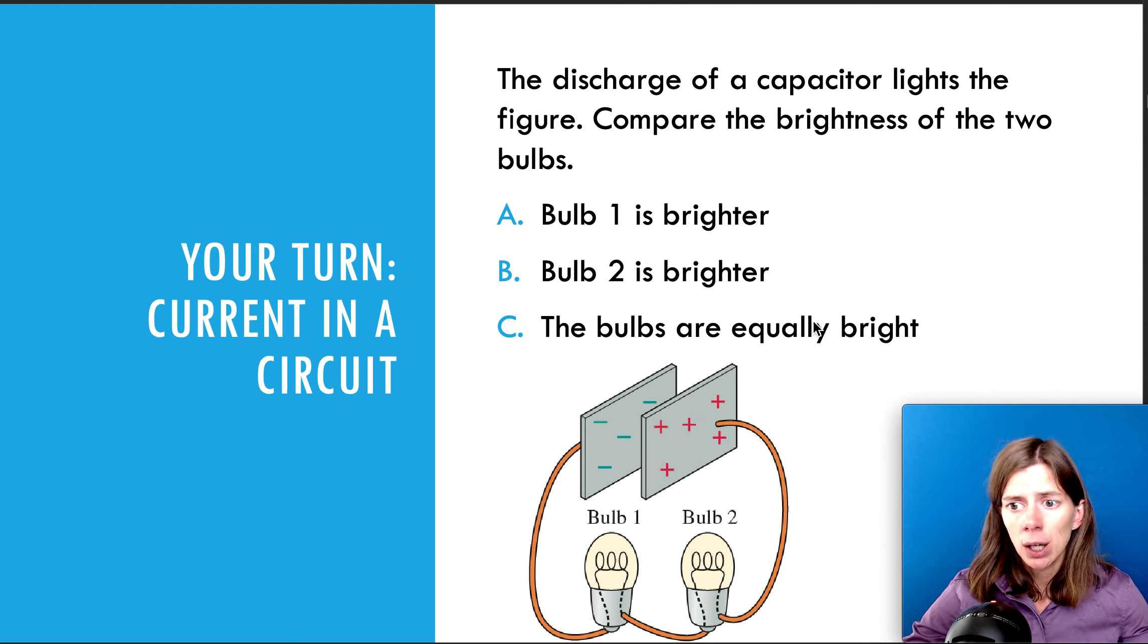Well, we've defined a current as the flow of positive charges. So, we know that the positive charges would move clockwise towards that negative plate. So, that's the direction of the current. So, which bulb is brighter? Well, we just learned conservation of current. The charge doesn't get used up. As the charges flow through bulb 2, then they're going to flow through bulb 1, and then they're going to reach the plate. So, the same amount of charge flows through each bulb. They're both going to be the same brightness.